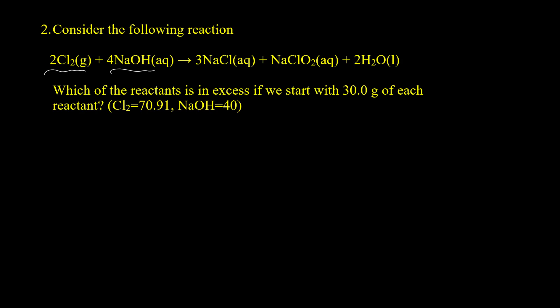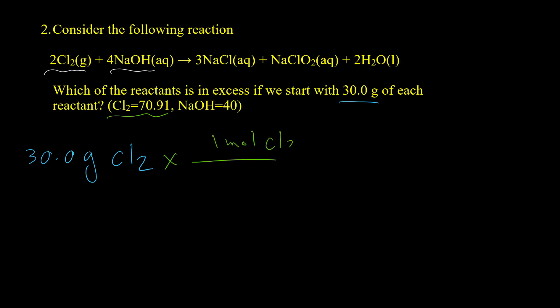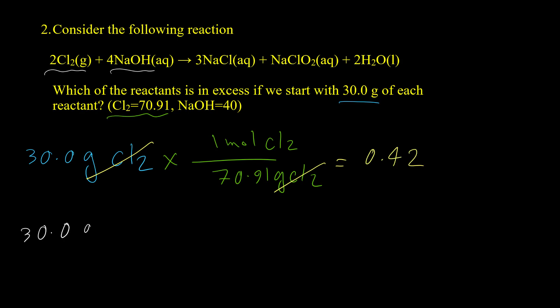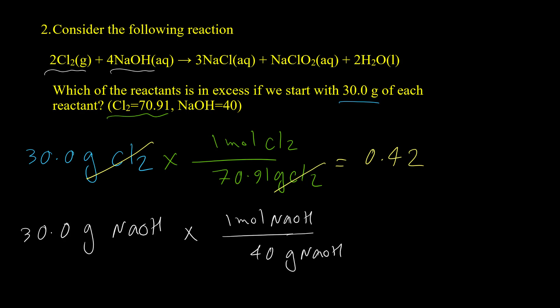The first step is to find the moles for each reactant. For Cl₂: 30 grams divided by the molar mass of 70.91 g/mol gives 0.42 mol Cl₂. For sodium hydroxide: 30 grams divided by 40 g/mol gives 0.75 mol NaOH. Now that we have mole values, we can find the mole-per-coefficient ratio.